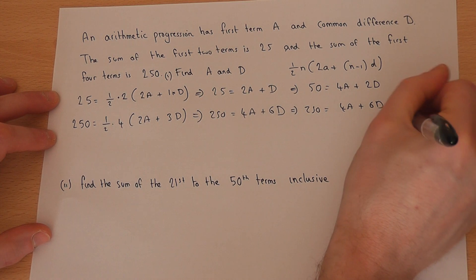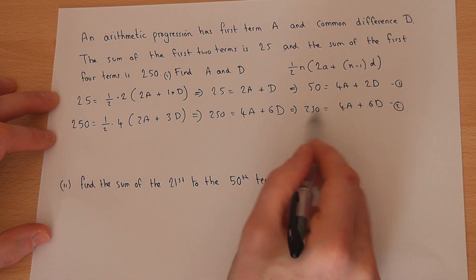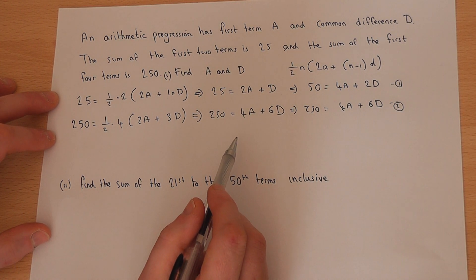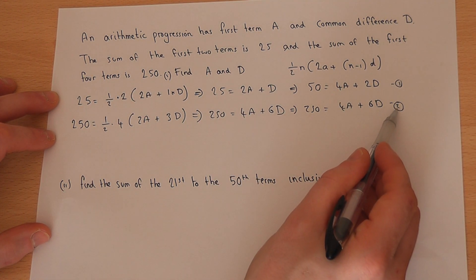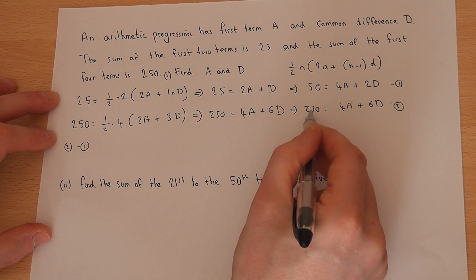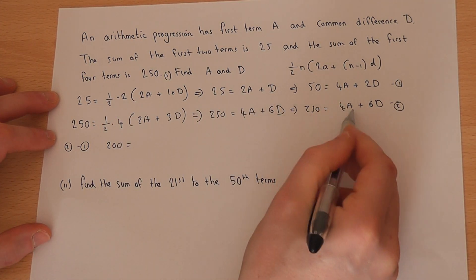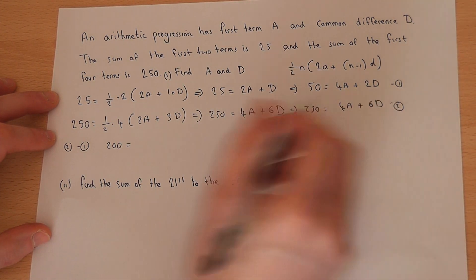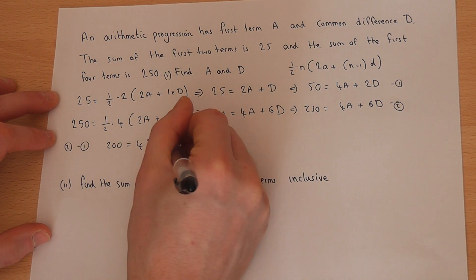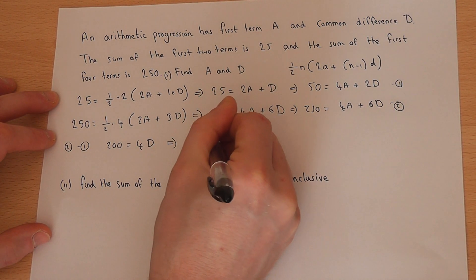If I then times the top equation by 2, I get 50 equals 4a plus 2d. If I leave the bottom one the same, 250 is 4a plus 6d. So equation 2 and equation 1, with 4a and 4a in both of the equations. So if I now do equation 2 take away equation 1, then the 4a's cancel out. So 250 take 50 is 200. The 4a's cancel out. 6d take away 2d is 4d. So this tells me that 4d is 200, so d equals 50.